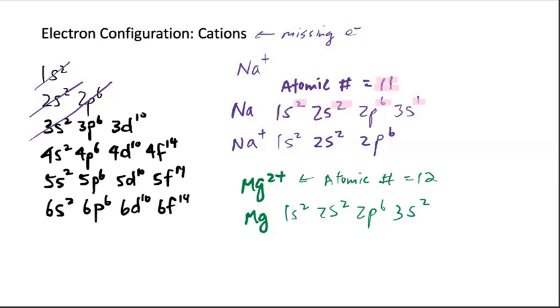So let's confirm. We have 2 plus 2 plus 6, 10. 10 plus 2 is 12. We're good. And then if we have Mg2 plus, then it will be, we take away 2 electrons. So it is just 2p6 again.